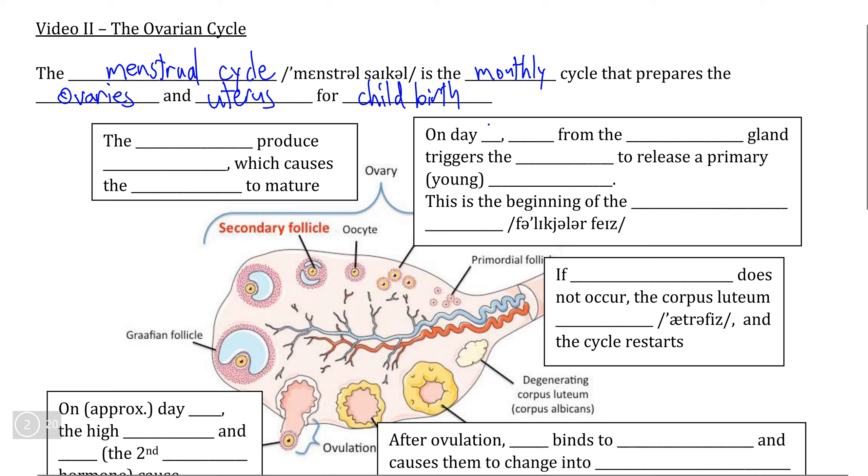We start at the beginning of the cycle on day one, looking at the first of the two pituitary hormones released at the beginning of the female reproductive cycle, that being FSH.